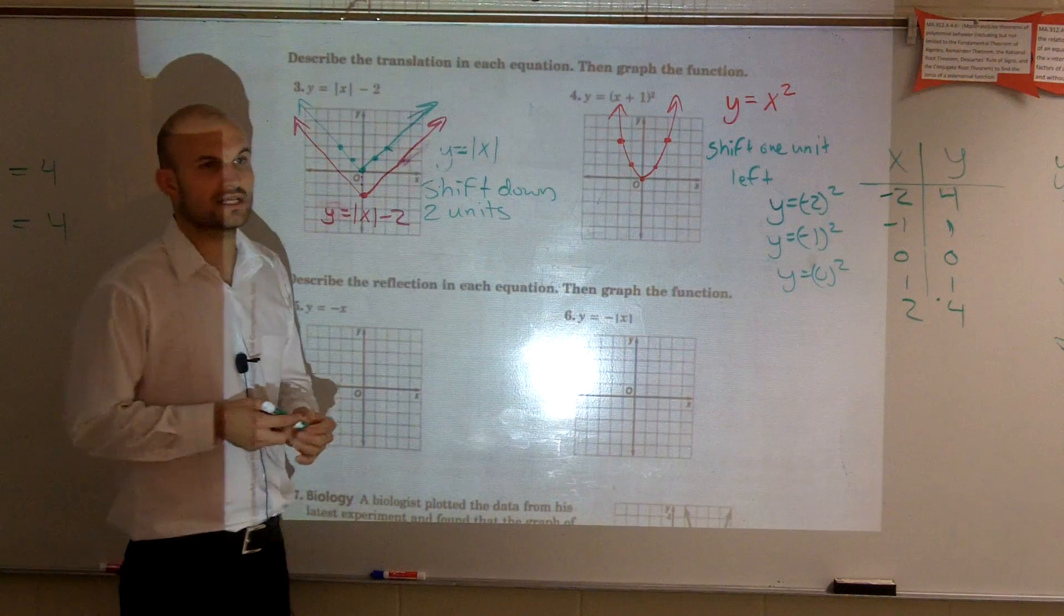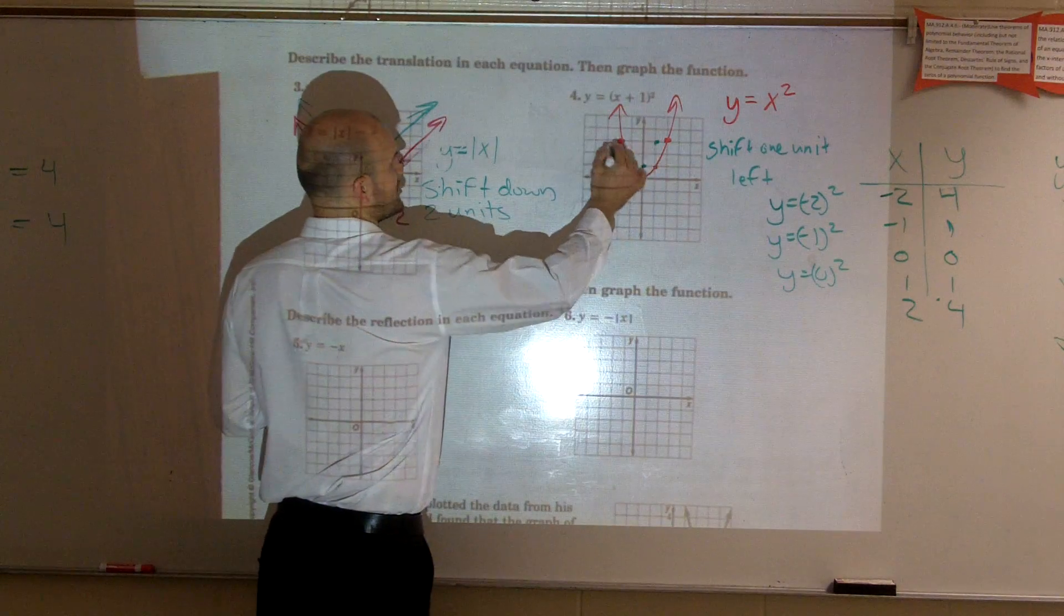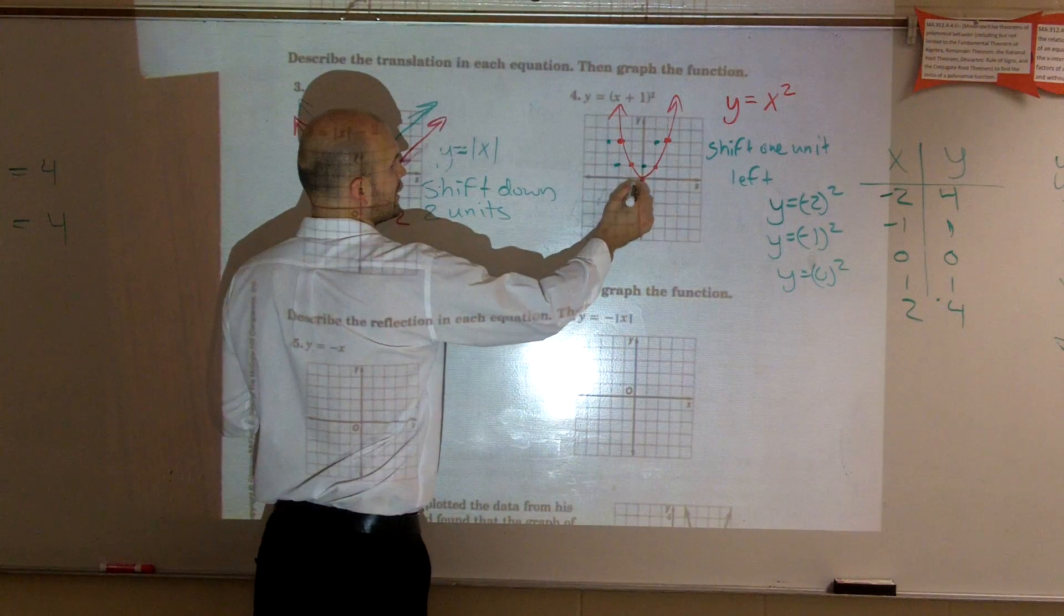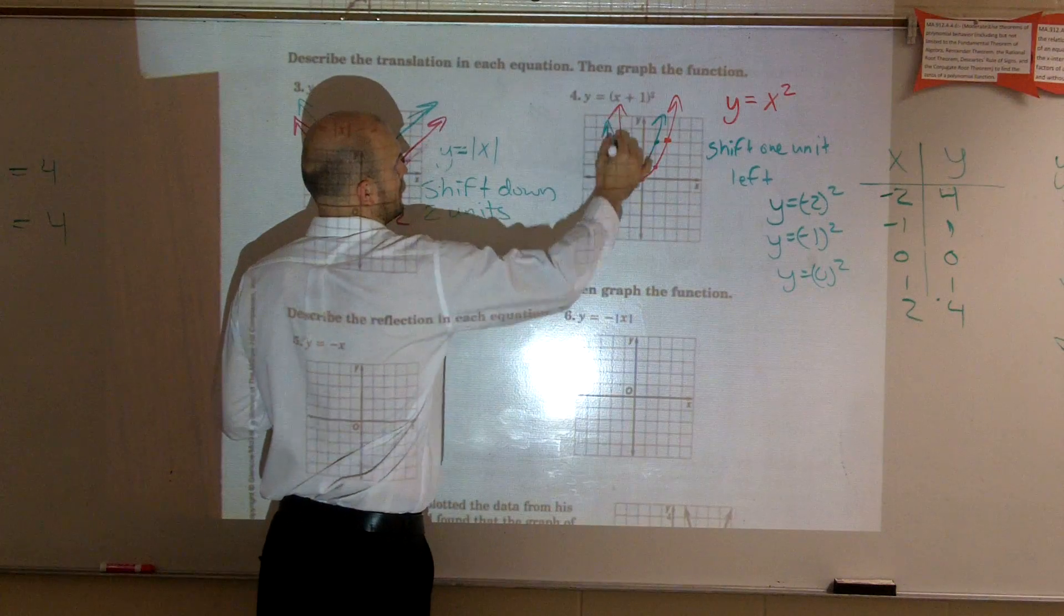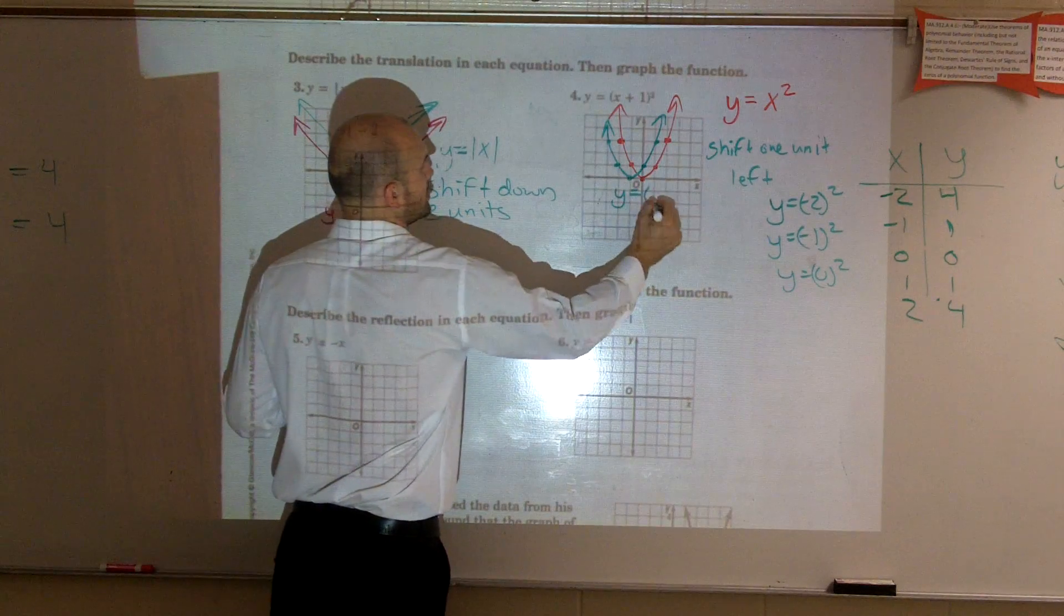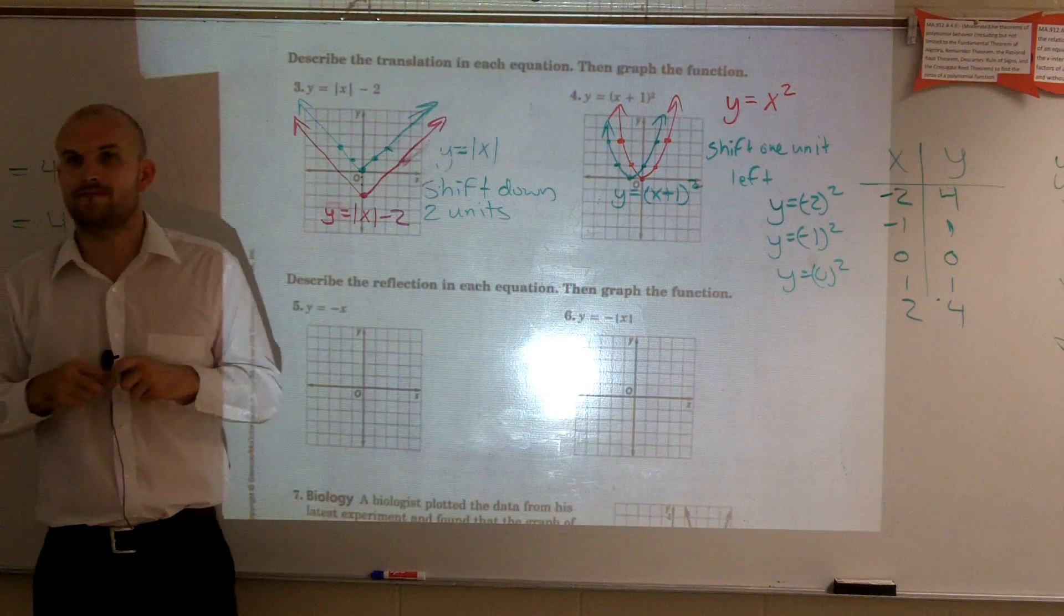So we're going to shift one unit to the left. So all I do is I take all of my points, and I shift it one unit to the left. y equals x plus 1 squared.